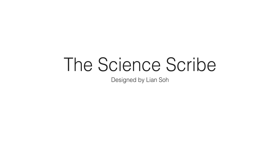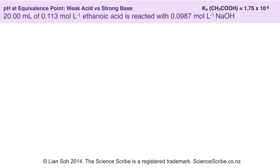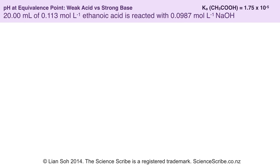This is Lien So from The Science Scribe and in this video we're going to look at equivalence point pH. Let's say for example we're running a weak acid versus strong base titration. My weak acid is going to be 20 mL of 0.113 mol/litre ethanoic acid going in the flask, and my strong base is going to be sodium hydroxide at 0.0987 mol/litre.